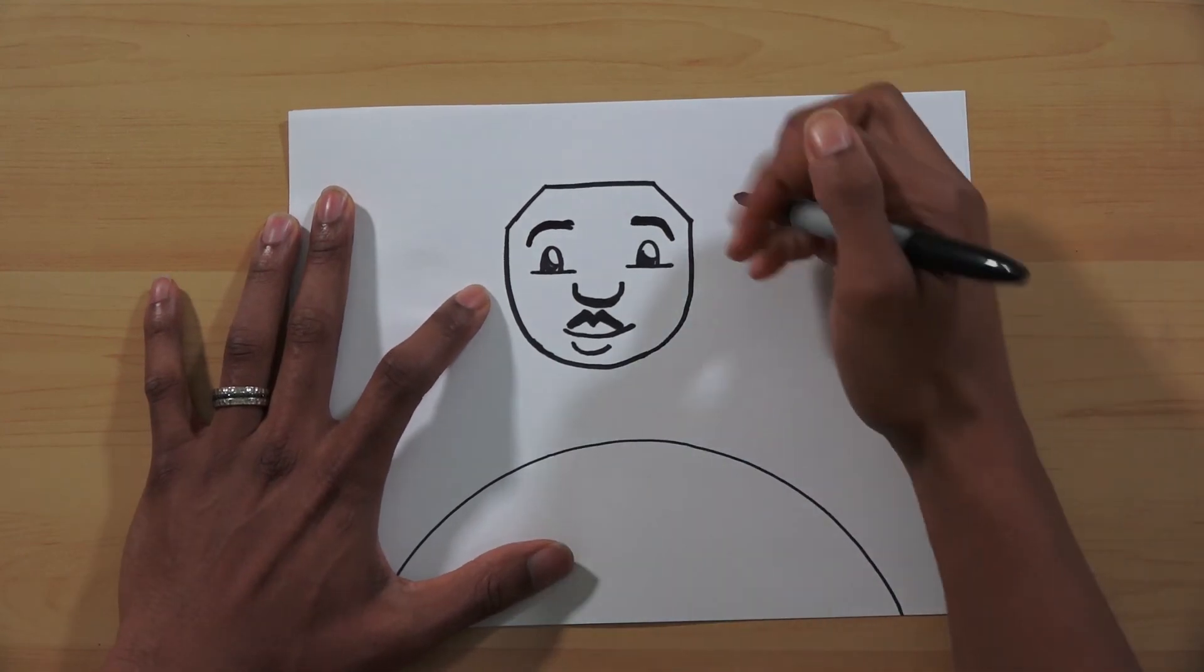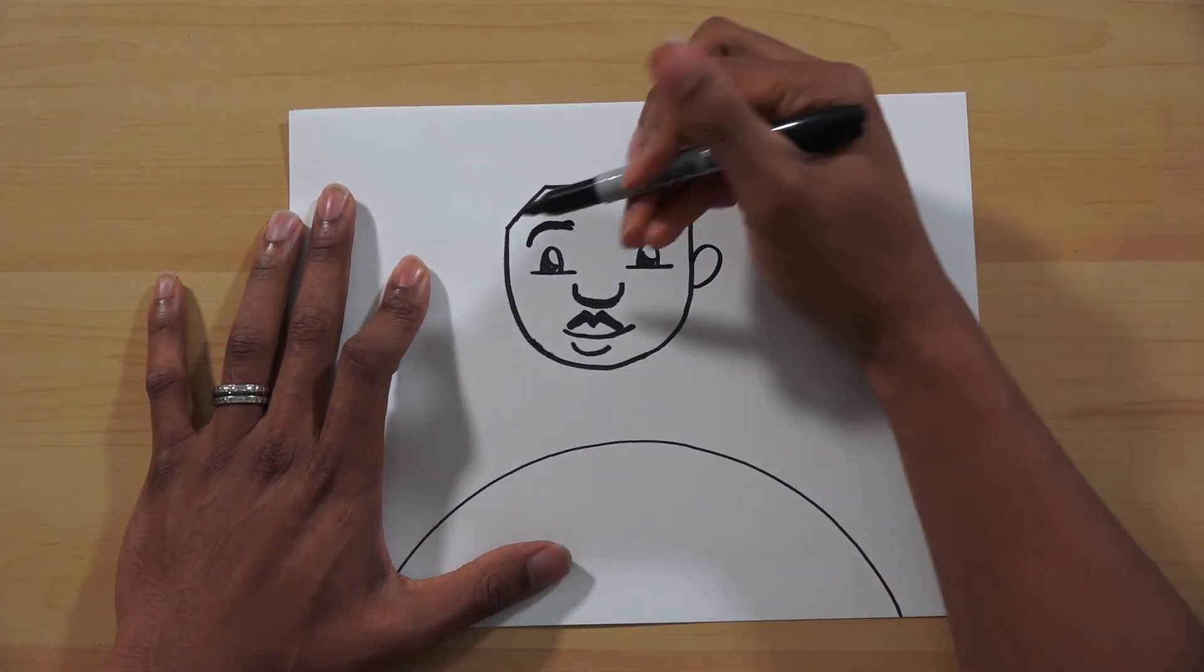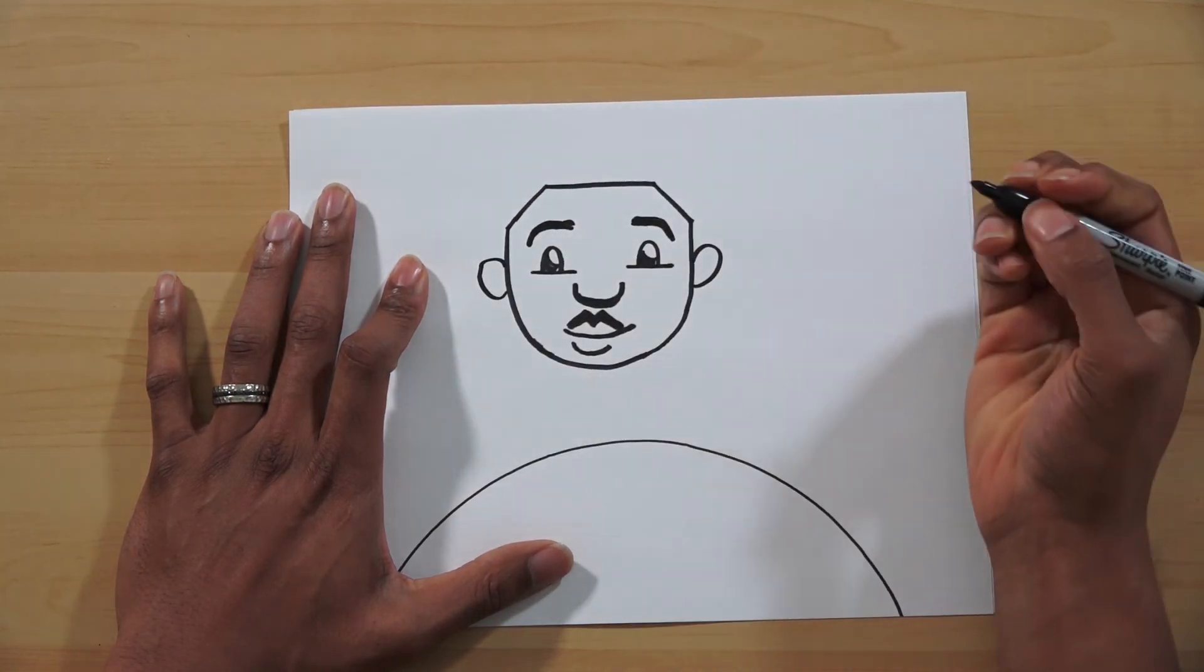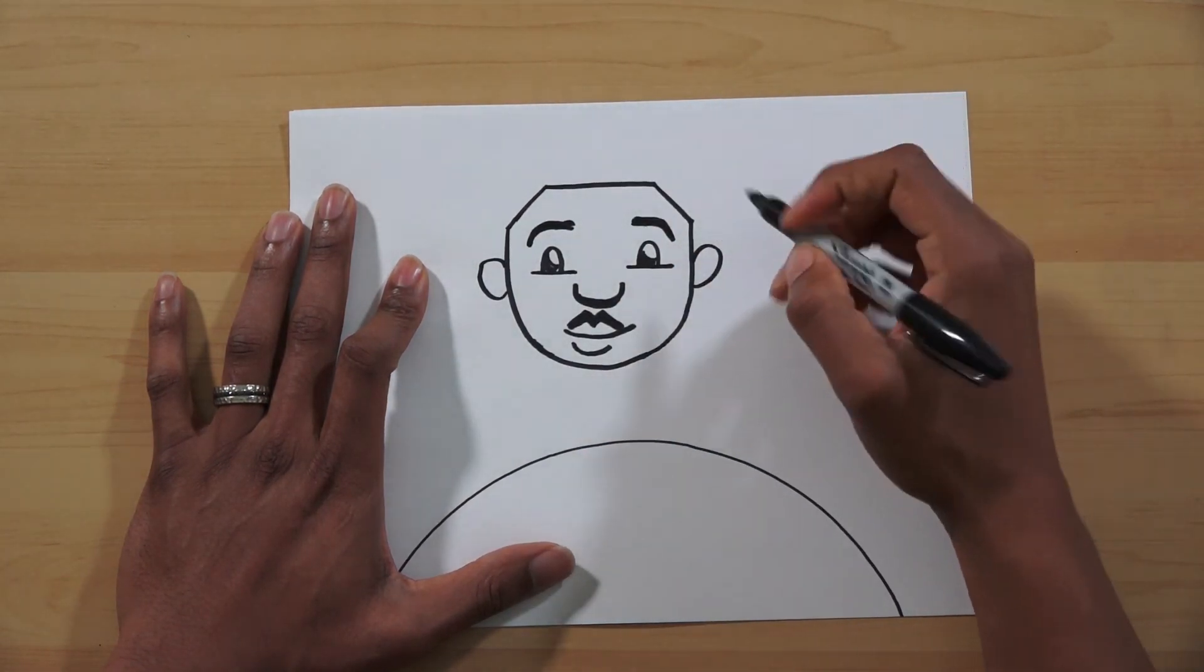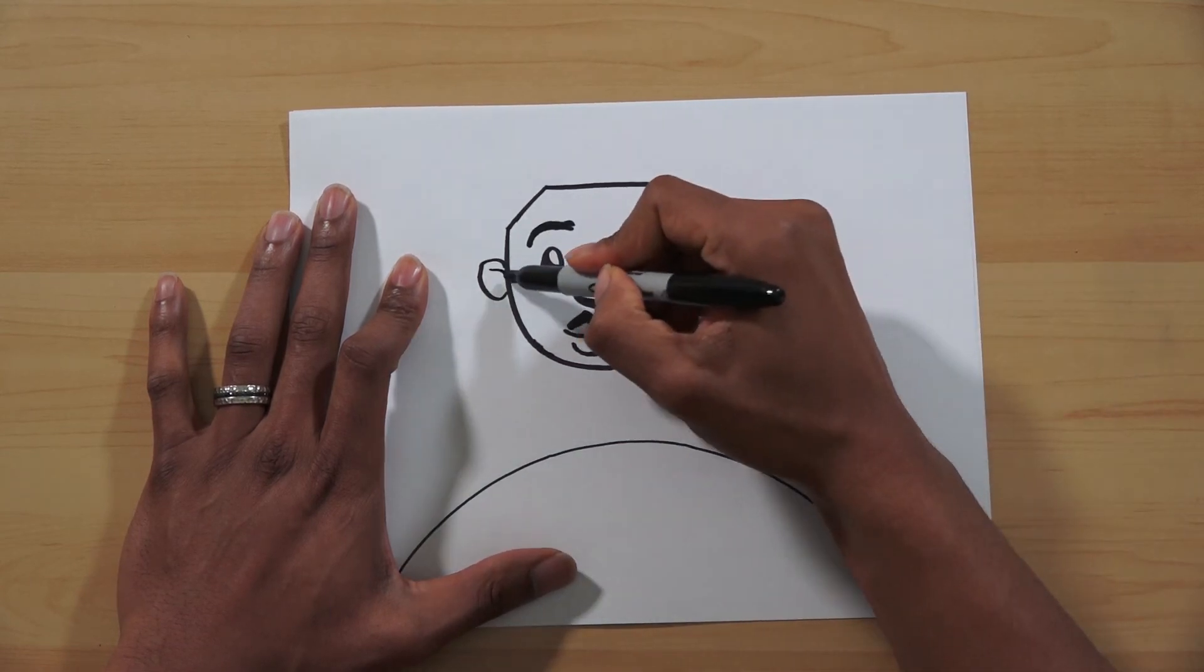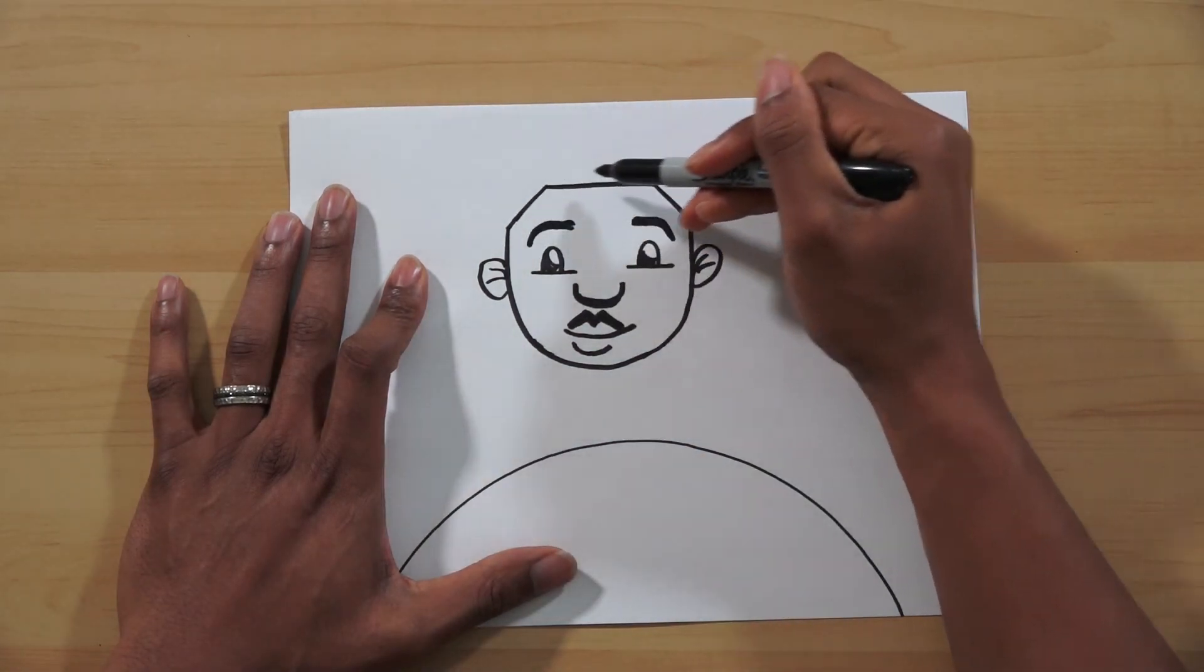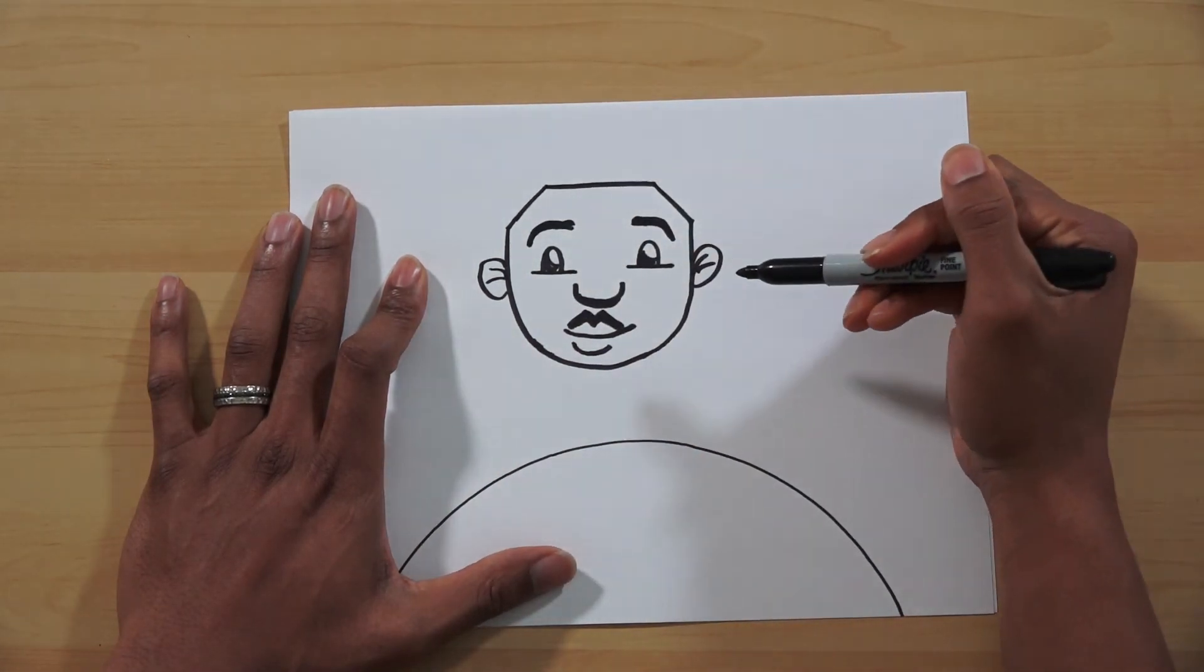Now we can move on to his ears. We'll start off with a nice loop on one side and a nice loop on the other side. Followed by two little curved lines for detail. So curve, curve, curve, curve, curve.